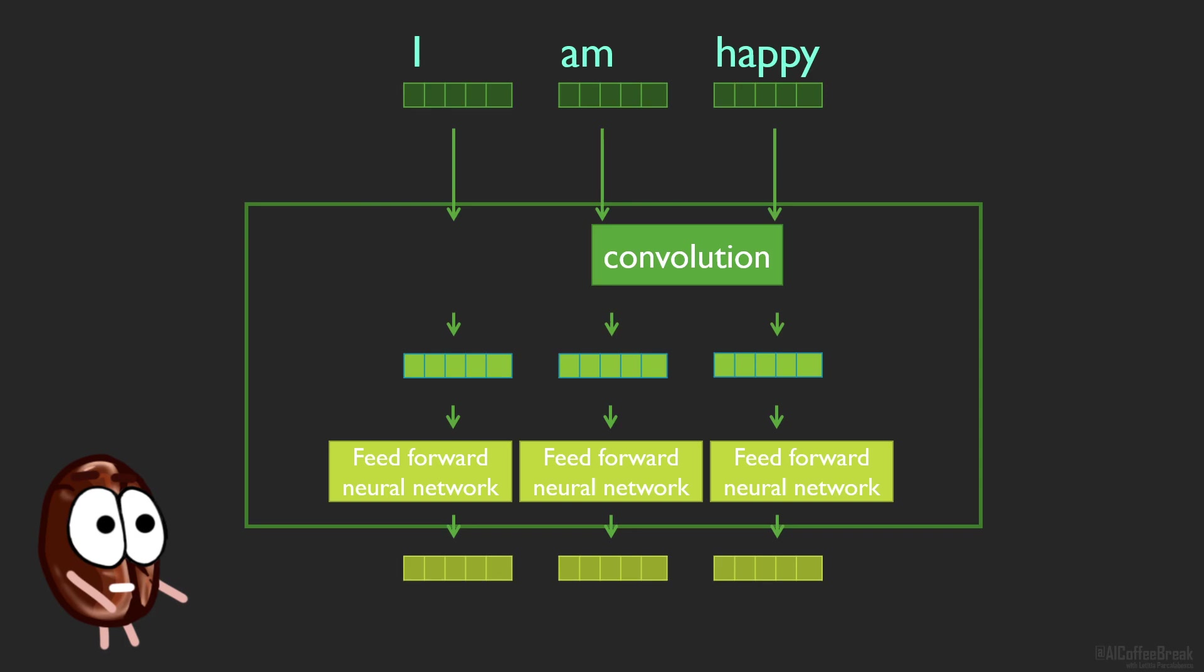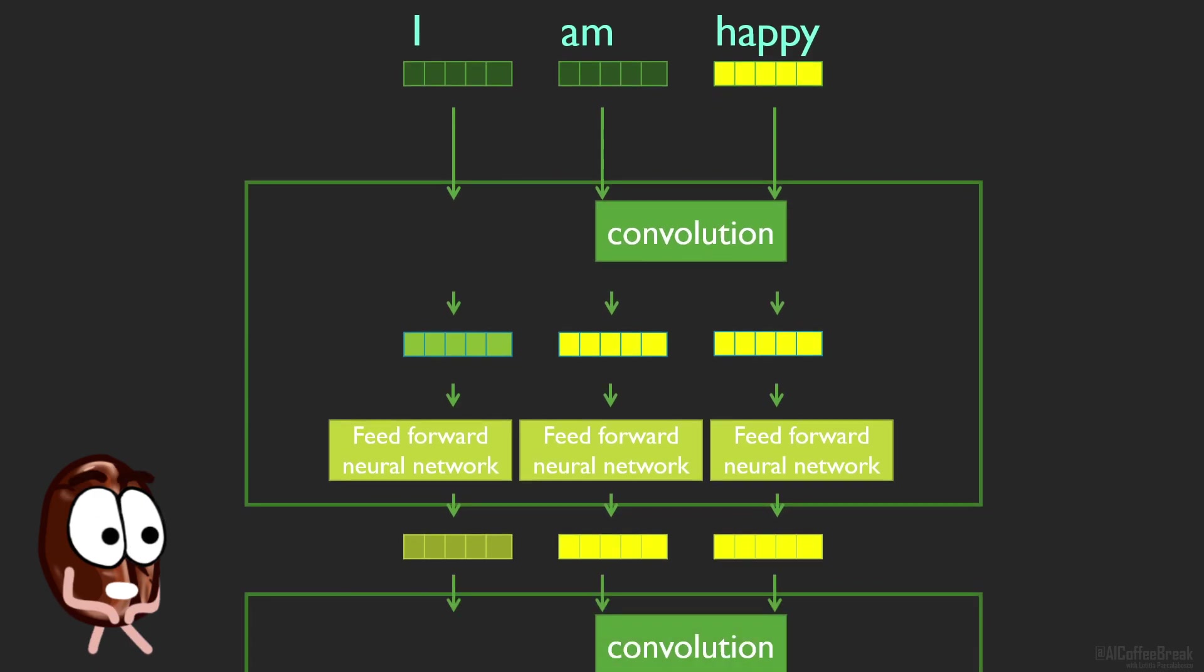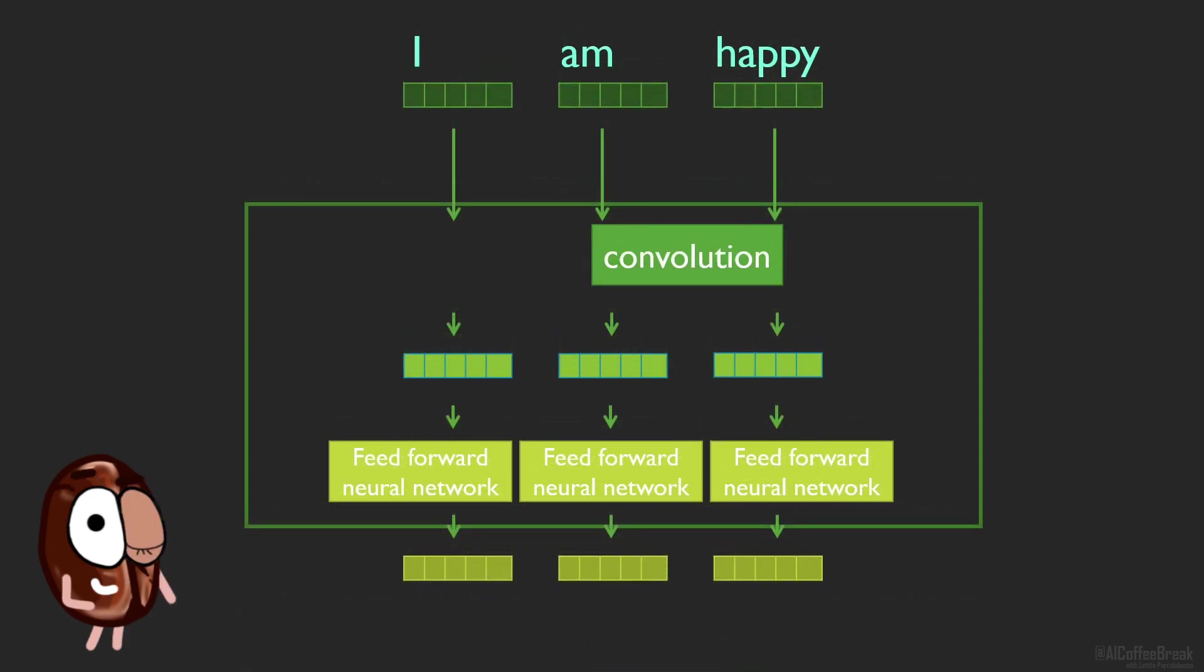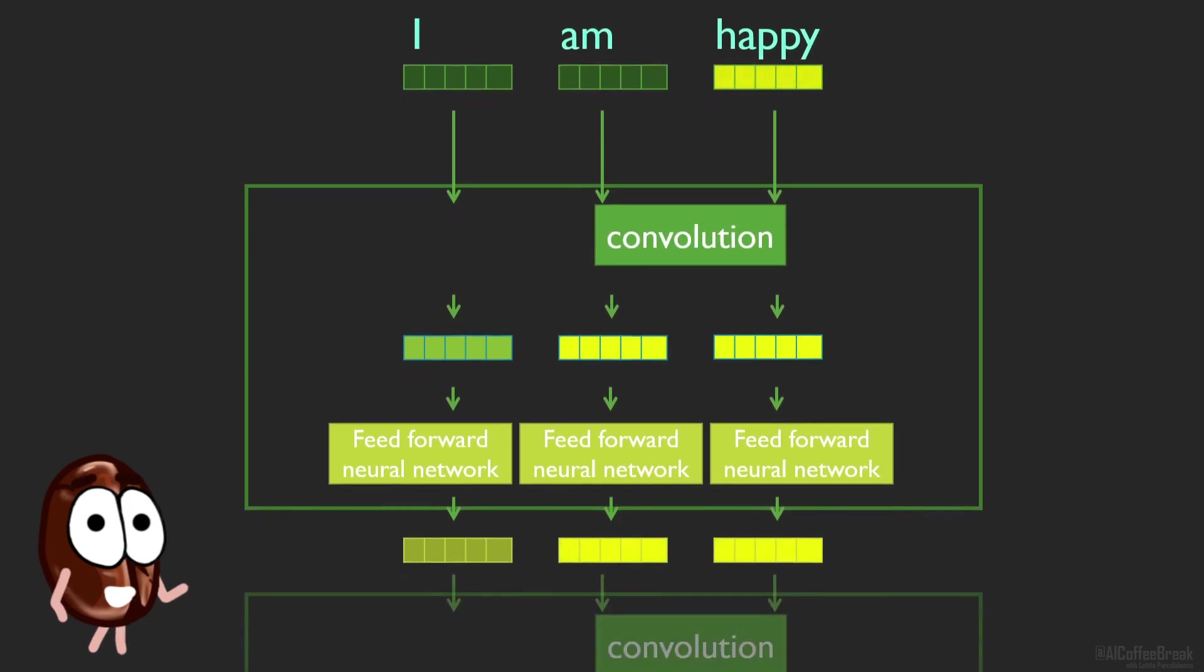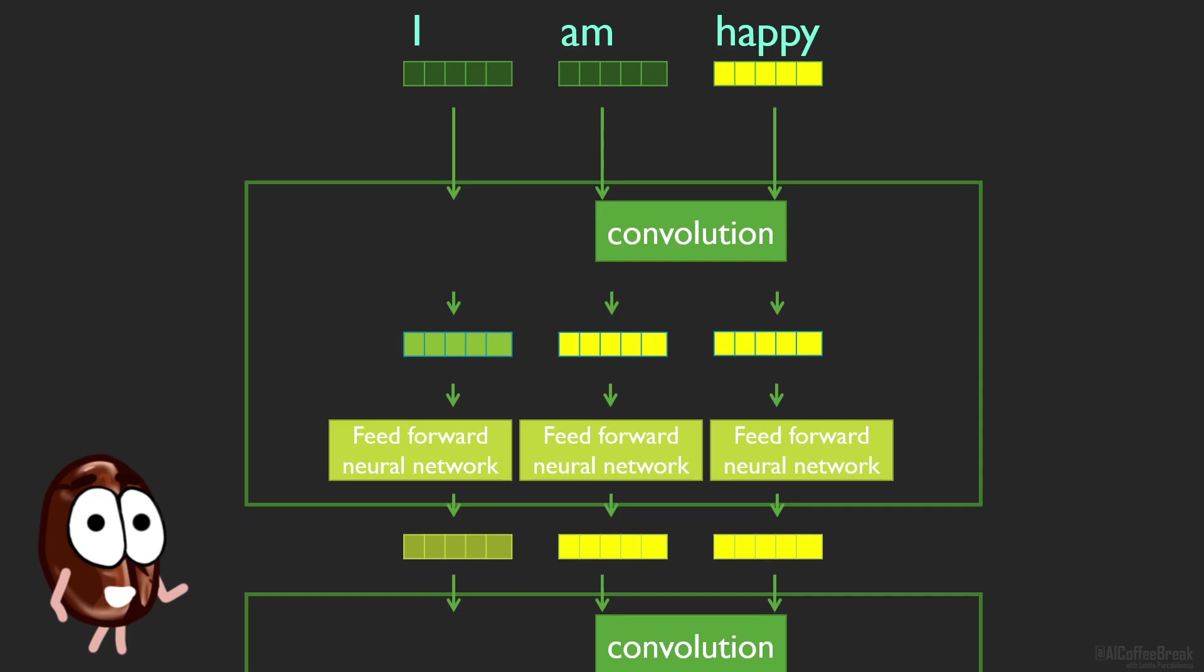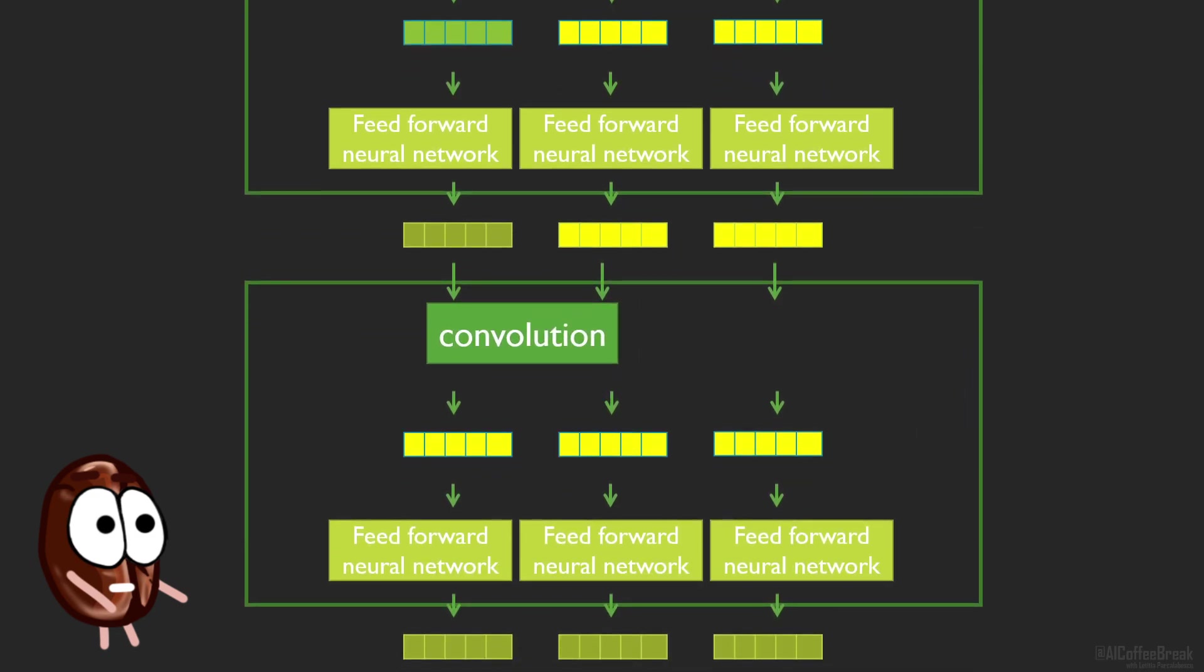This also means that the global context cannot be captured by one layer only in a convolutional network. It is the succession of layers that increases the context window or field of view. For example, for a kernel of the size of two tokens, if the third token would be radioactive, let's say in yellow, after one layer the first token doesn't include information from the third token, but only from itself and the second token. But after the next layer, it also contains information from the third token.